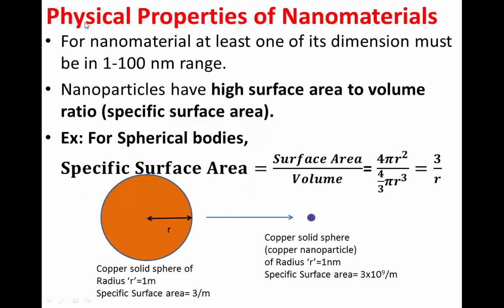First, let us see the physical properties of nanomaterials. If at all I want to call a material as a nanomaterial, at least one of its dimensions should be in the range of 1 to 100 nanometer. Therefore, for nanomaterials, the specific surface area is very high. Specific surface area is nothing but the surface area to volume ratio. Now let us take a spherical body and try to calculate specific surface area at different dimensions.